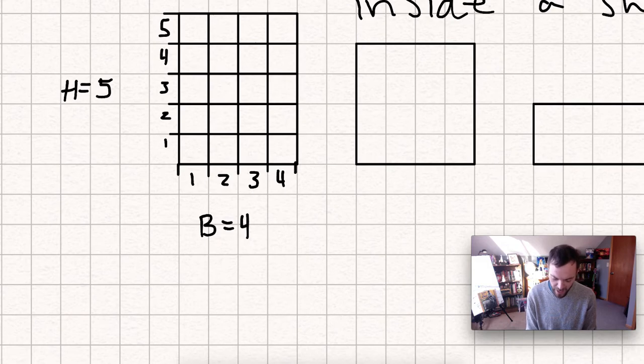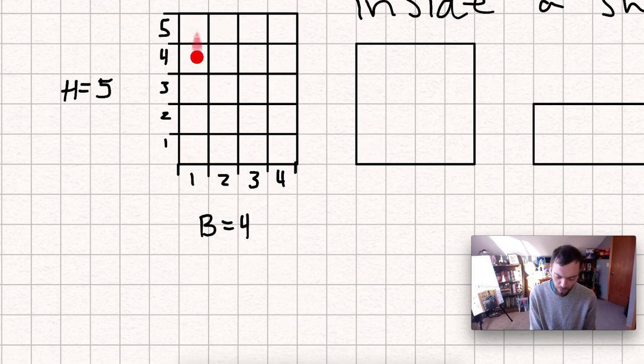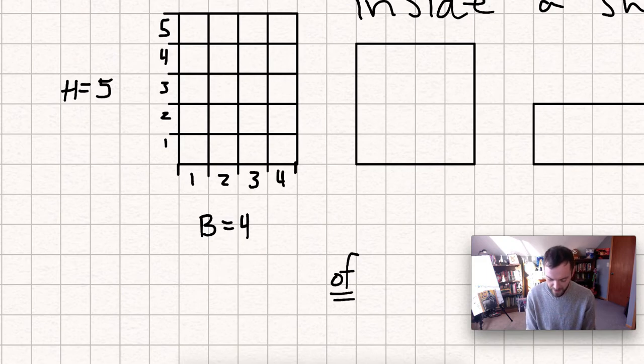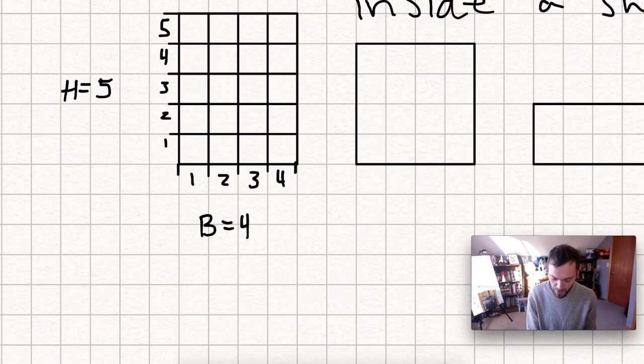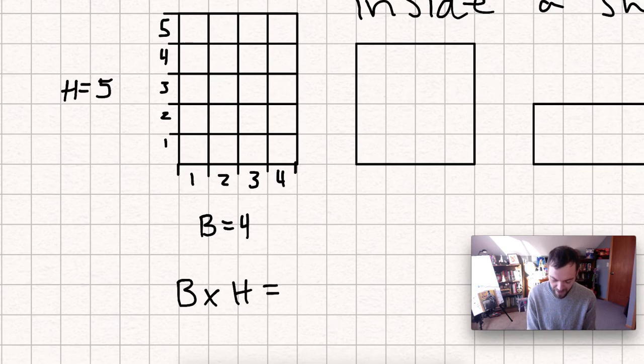So what I've done now is I've measured how wide the base is, how tall the height is, and by measuring it, notice what I've created. I've created all of these squares inside. I have five rows of four, or four rows of five. 'Of' is a multiplication word. When we see that word 'of,' it gives us a clue that this might be multiplication.